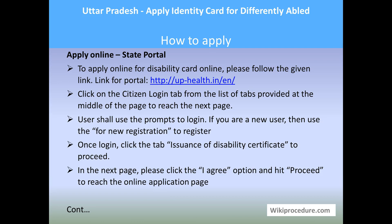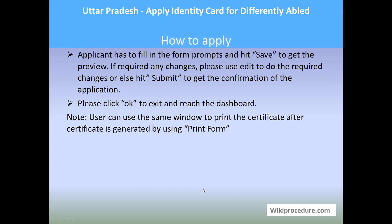Enter the appropriate details and hit Login to reach the next page, where you will be prompted to click on the option 'Issuance of a Disability Certificate' to proceed. On the following page, select the 'I Agree' option which explains the details to the user, then hit Proceed to reach the online application page. Fill in all the required form fields and hit Save to preview your application and verify nothing is missed or incorrectly entered. If everything is correct, hit Submit to submit your online application for processing.